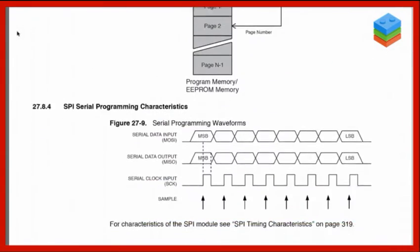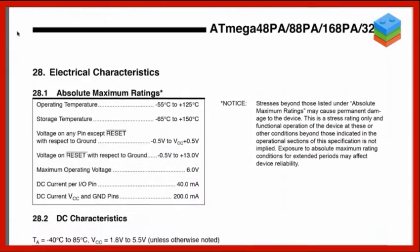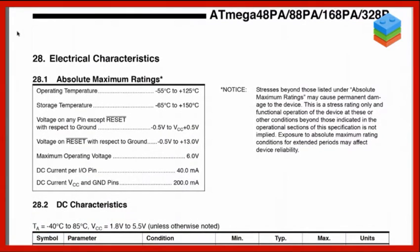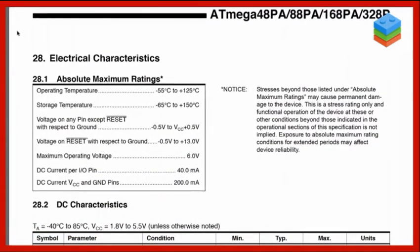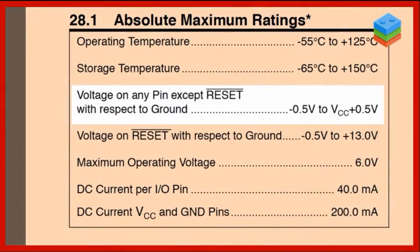If we look at the datasheet of the microcontroller that the Arduino uses, there's a section called absolute maximum ratings. On here we see voltage on any pin except reset with respect to ground, and it says it's negative 0.5 volts to VCC plus 0.5 volts. For our purposes, we're going to say VCC is 5 volts.